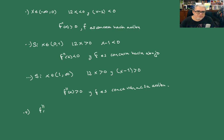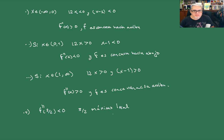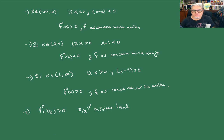En x = 3/2 estamos en el intervalo (1, ∞), entonces f''(3/2) > 0 y en 3/2 hay un mínimo local — ya habíamos dicho que iba a ser un mínimo local, y esto lo confirma.